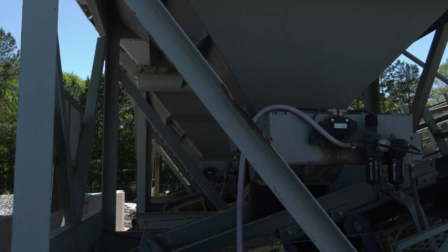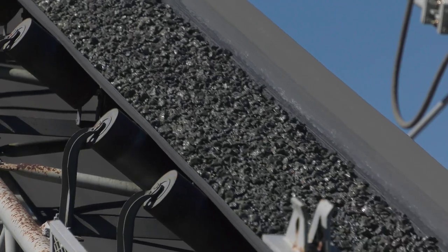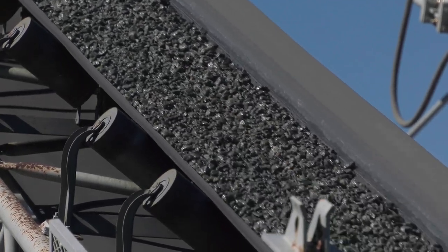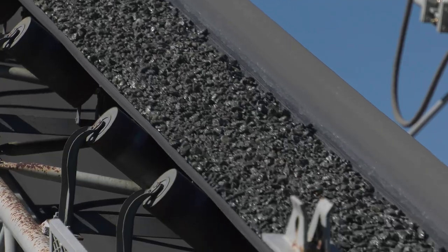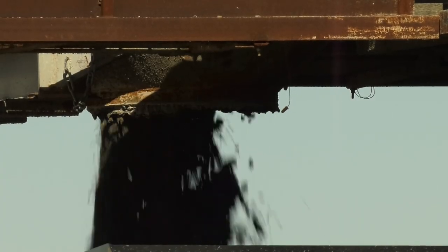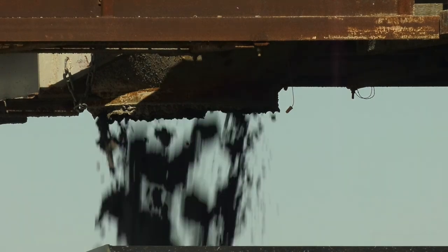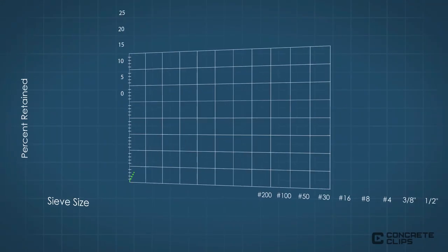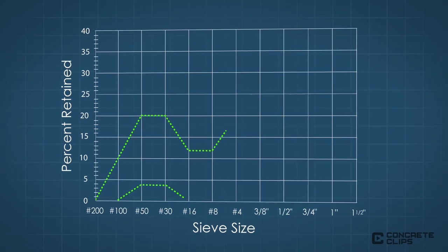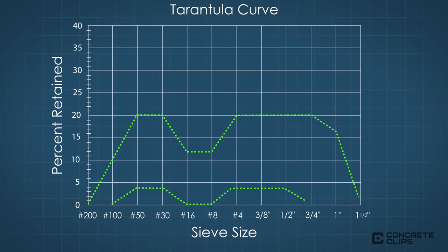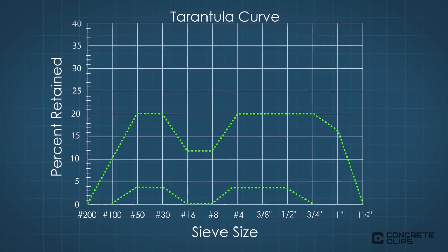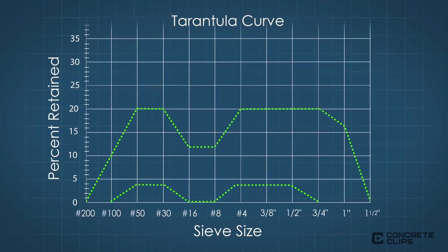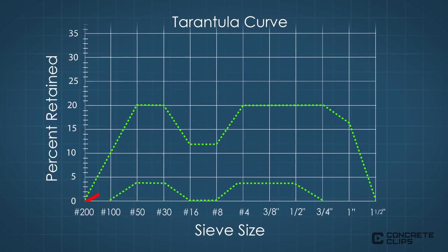Optimized gradation is a process of proportioning aggregates in concrete mixture design to improve workability while maintaining desired long-term performance characteristics. An effective way of optimizing gradation is through the use of the Tarantula Curve. The Tarantula Curve establishes the target range or tolerance for the combined aggregate gradation for each sieve size.